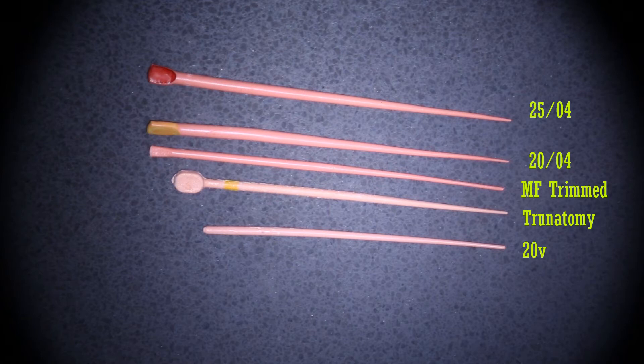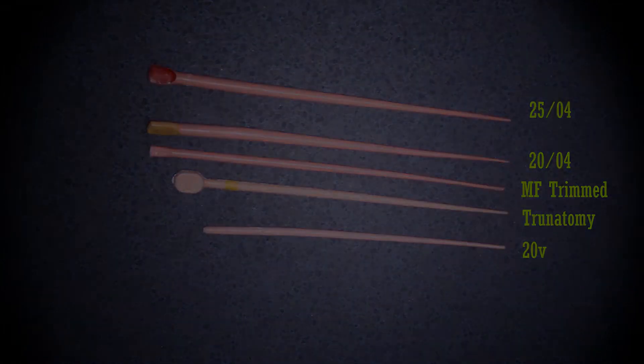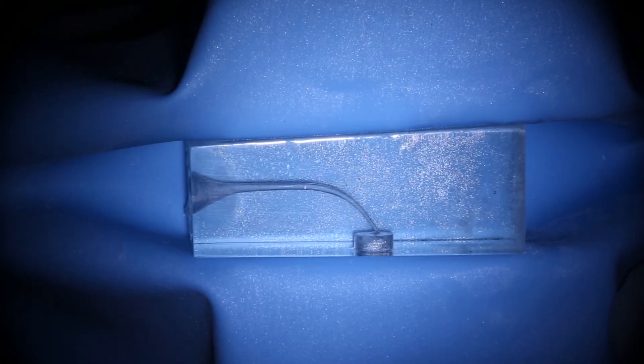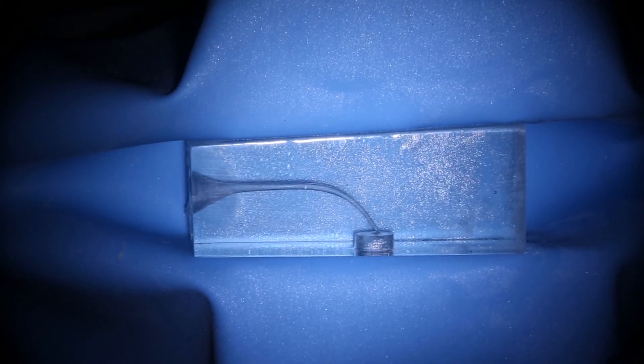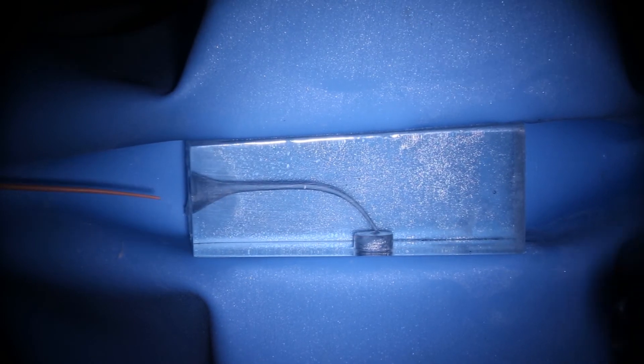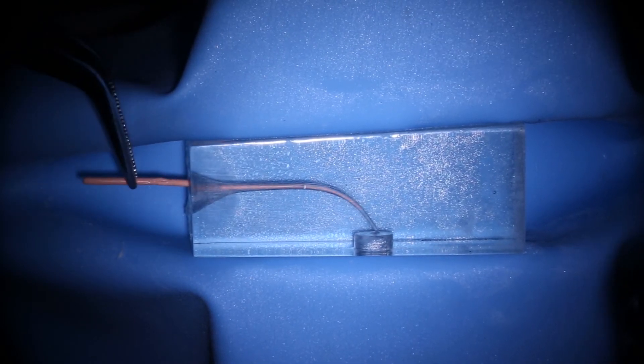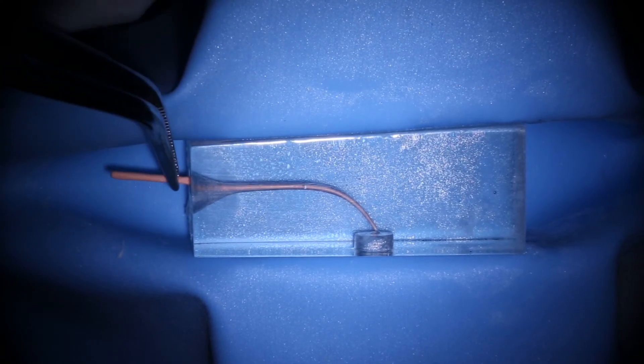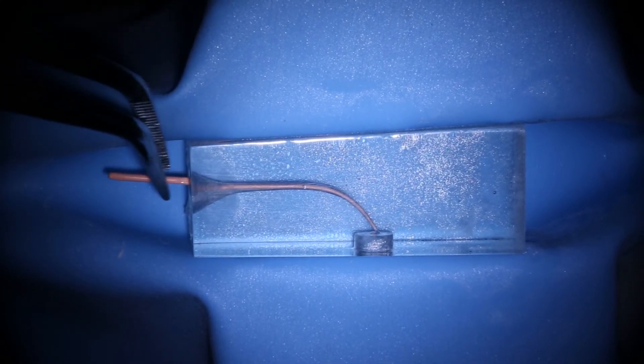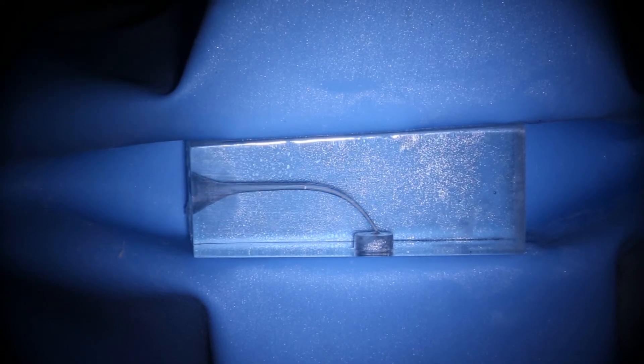So now I'll run through the obturation just for example, so you can appreciate the differences between a trimmed medium fine cone, a TrueNatomy cone or a 4% tapered cone as an option for obturation. So now we can have a go at fitting our cones. So this cone here, the 20V cone that we would otherwise previously use, but unfortunately now becoming unavailable. And again, we see that seated fitting, that's good.